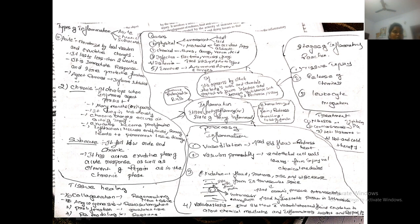Causes of inflammation: mainly physical causes, chemical causes, infections, ischemia, and immune disorders. Physical causes include environmental — heat and cold — and mechanical causes such as accidents, injuries, and assaults. Chemical causes include burns, drugs, snake venom, and acid. Infections include bacteria, virus, and fungus. Ischemia means decreased blood supply to the tissue. Immune disorders include autoimmune and allergic conditions.